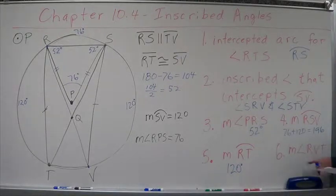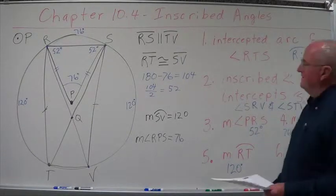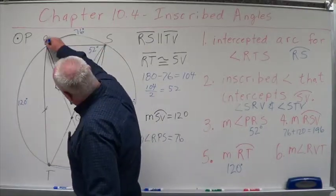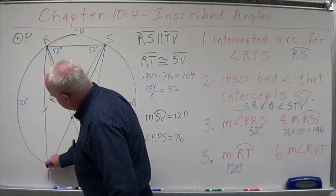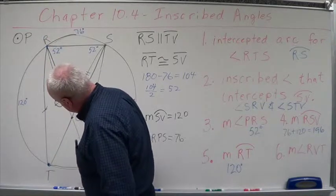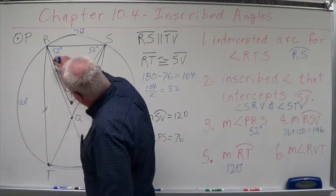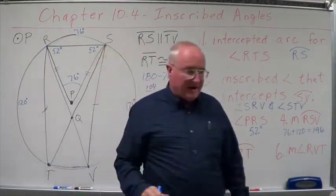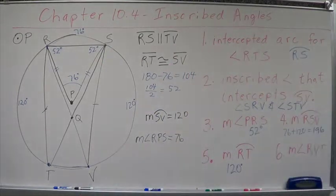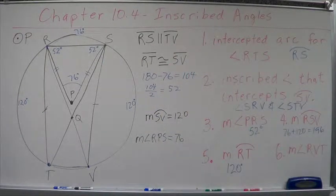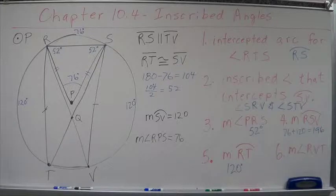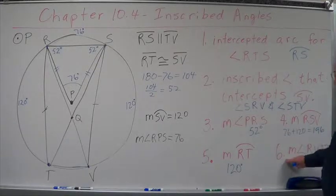Now, what is the measure of angle RVT? RVT is an inscribed angle that intercepts this arc 120. What do we know about inscribed angles and the arcs that they create? The arcs are twice the measure of the angle. The angle is half the measure of the arc. So, therefore,